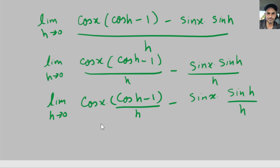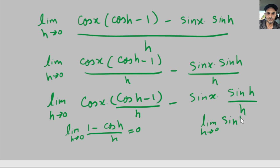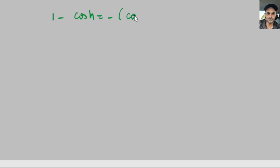There are two trigonometric limit properties we are going to apply here. One is the limit as h goes to zero of one minus cosine of h over h equals zero. The other is the limit as h goes to zero of sine of h over h equals one. Here we have cosine of h minus one, so we do a little manipulation: one minus cosine of h equals negative of cosine of h minus one, so cosine of h minus one equals negative of one minus cosine of h.